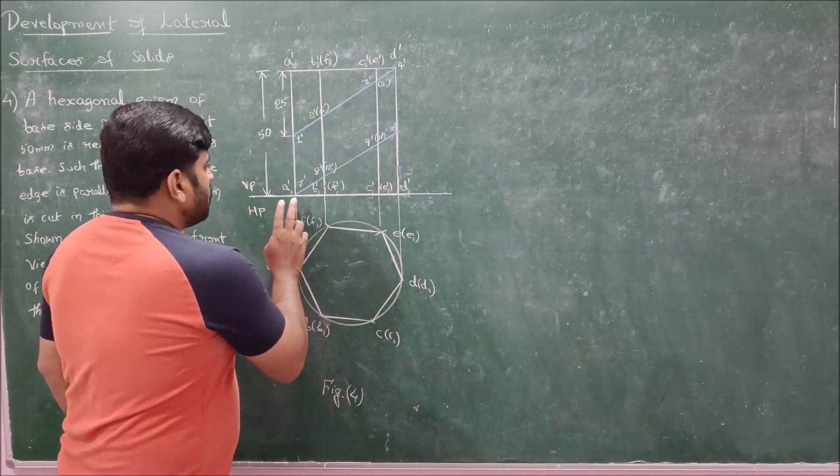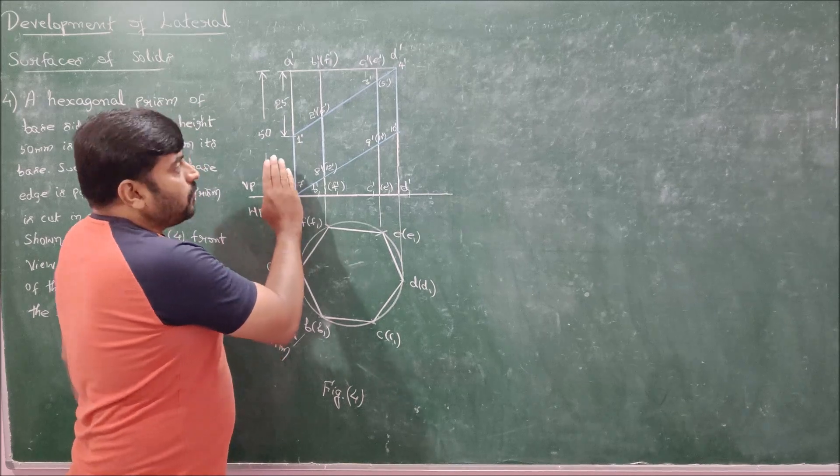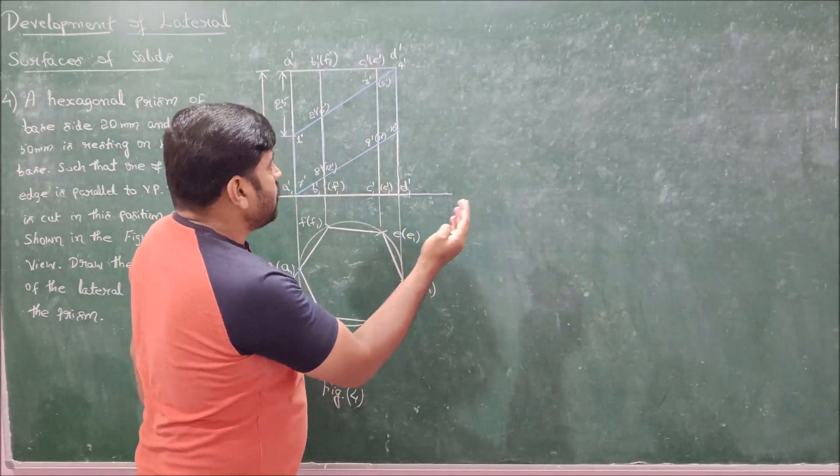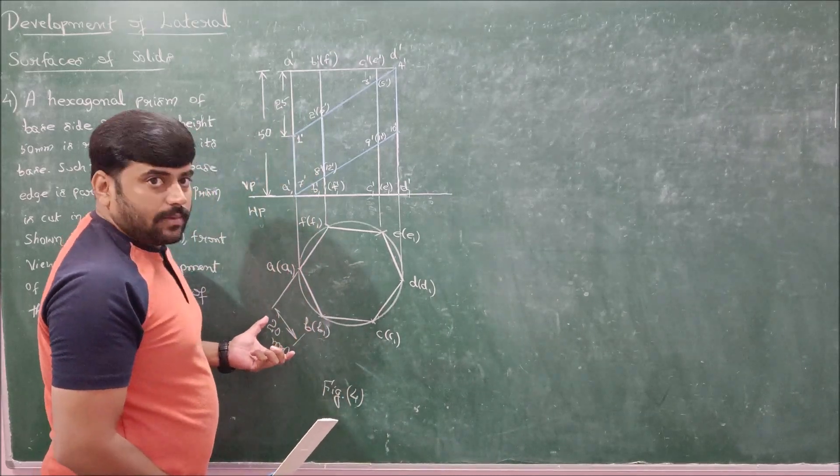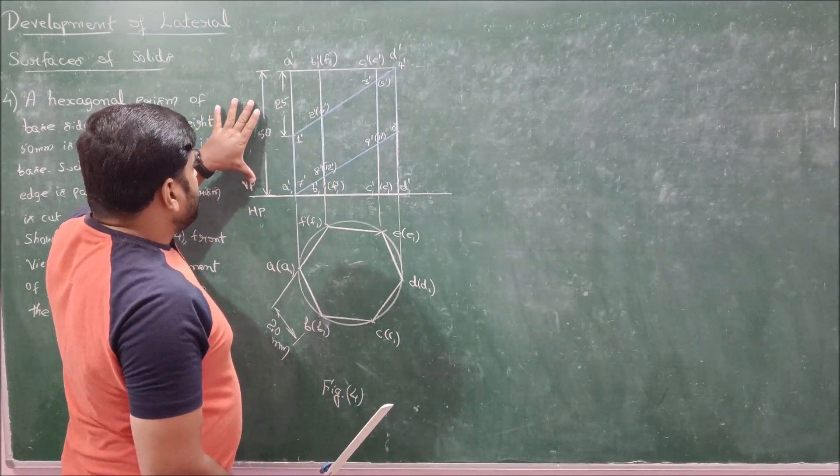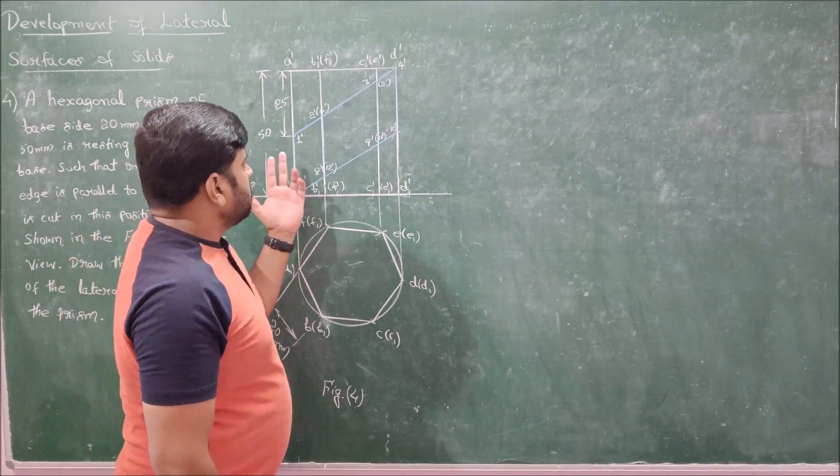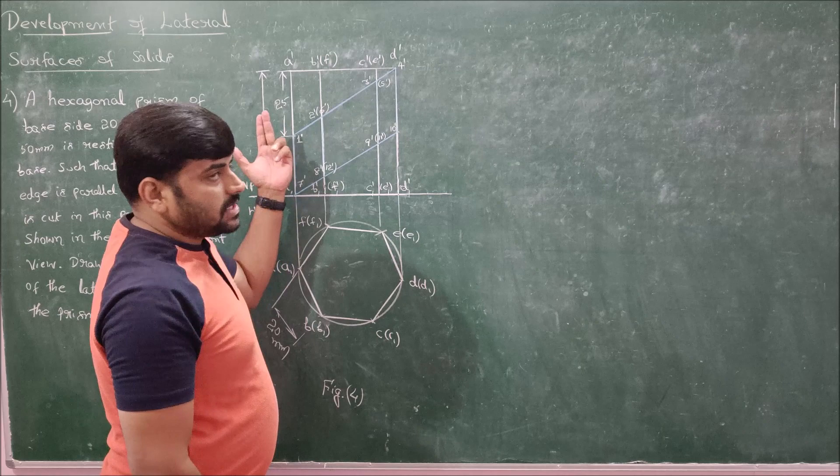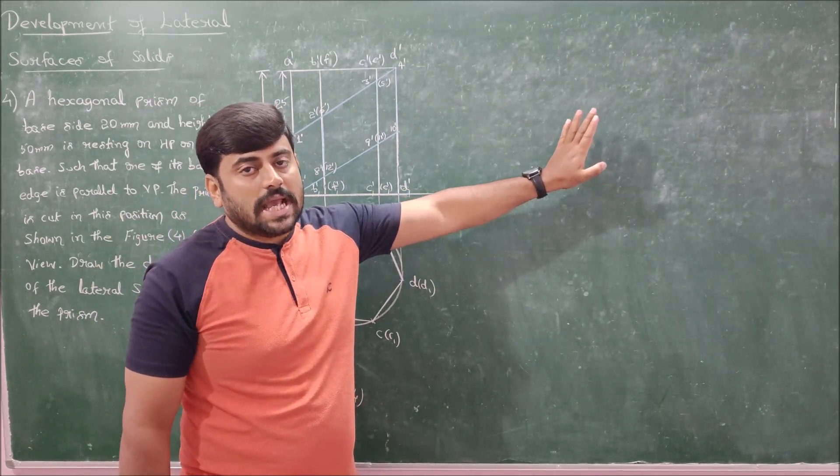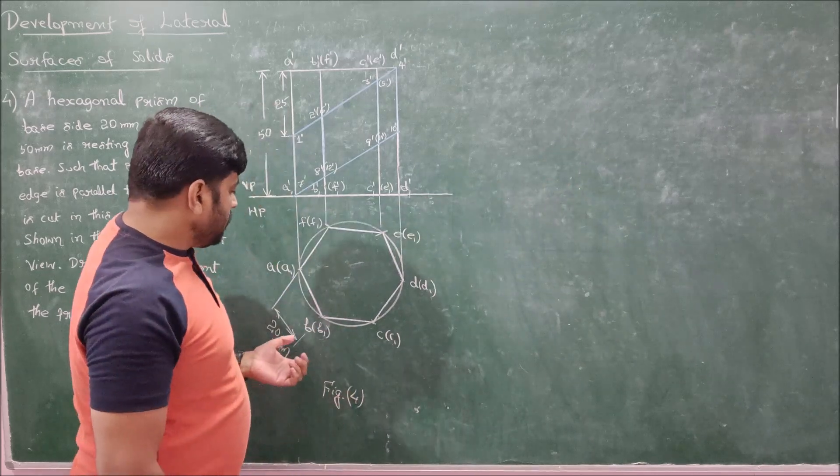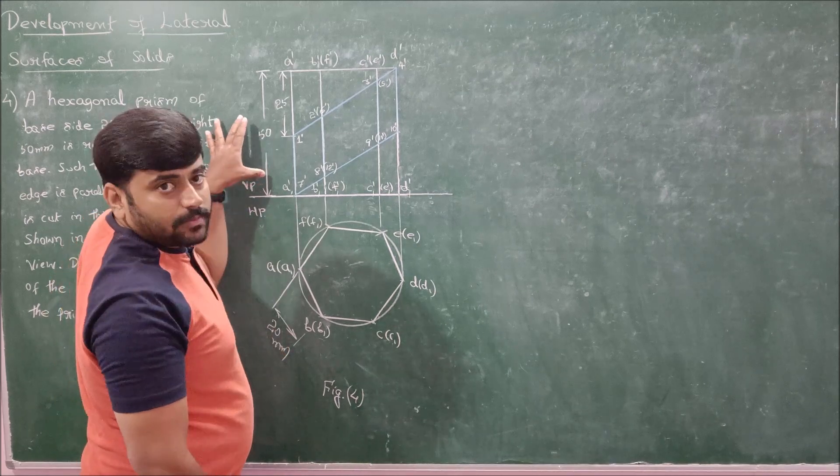So first if I cut from one of the longer edges of this hexagonal prism and unfold all the lateral surfaces, I am going to get 6 rectangular faces of dimension base height 20 mm and vertical height 50 mm. So therefore if I unfold from one of the longer edges, I am going to get 6 rectangular faces of dimension 20 mm by 50 mm.